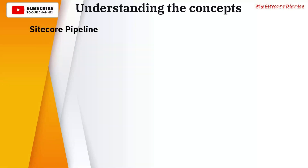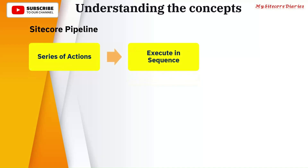What is a Sitecore Pipeline? It is a series of actions which execute in sequence to achieve an objective. There are a number of actions which get executed in sequence to achieve something, and that is called a pipeline. In Sitecore, we have some actions which execute in sequence and achieve something — that is called a Sitecore Pipeline.